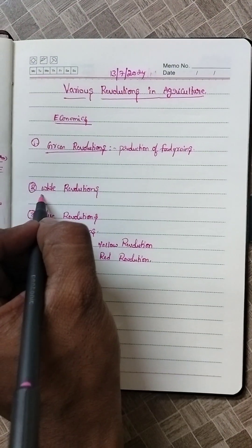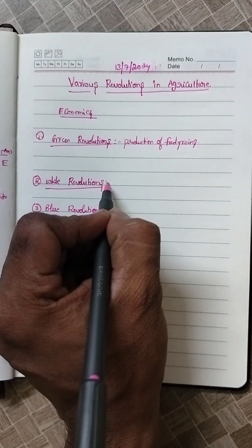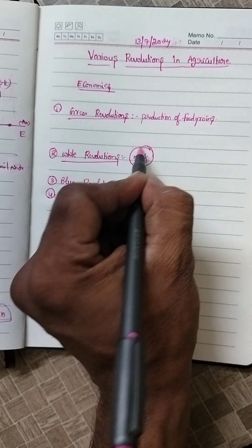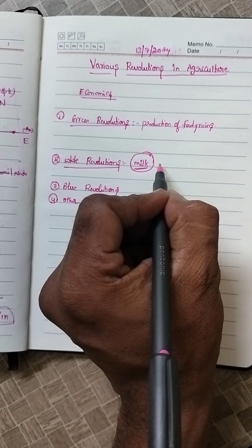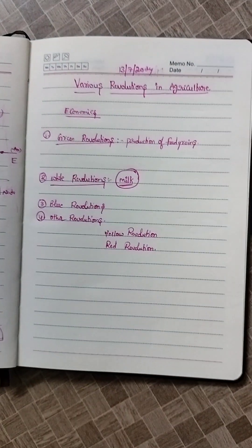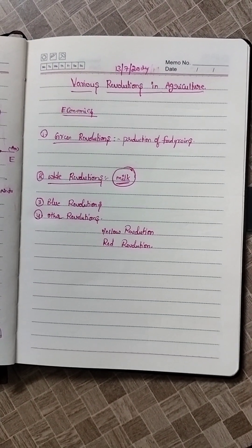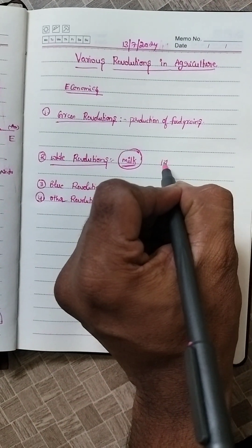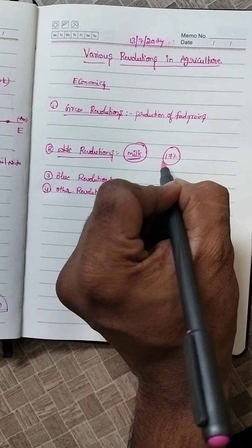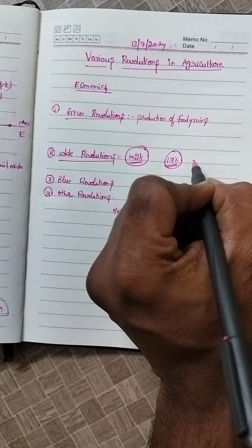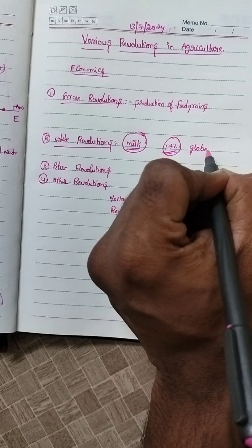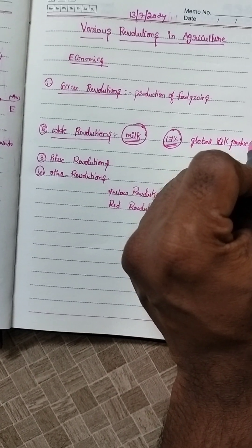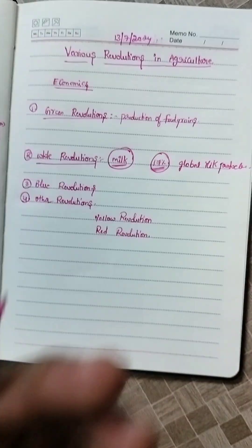Coming to the White Revolution, which is for milk production — India is the world's largest milk producer, accounting for 17% of global milk production. Verghese Kurien is the father of the White Revolution.